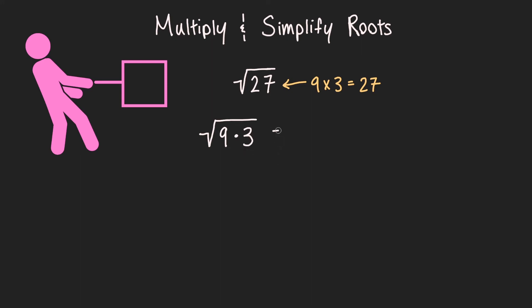And now what do we do from here? We can apply the multiplication rule we learned from earlier and change this into the square root of 9 times the square root of 3. And looking at this, do you see any perfect squares we can pull out? Well, 9 is a perfect square since the square root of 9 equals the square root of 3 times 3, and that is just equal to 3.